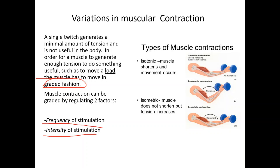In isotonic contraction, the muscle shortens and movement actually occurs. In isometric contraction, the muscle does not shorten but the tension increases. These are different scenarios — for instance, holding a weight without moving it is isometric, while actually moving the weight generates isotonic contraction.